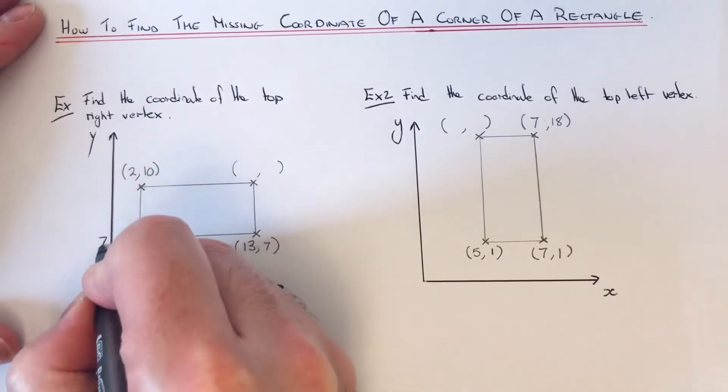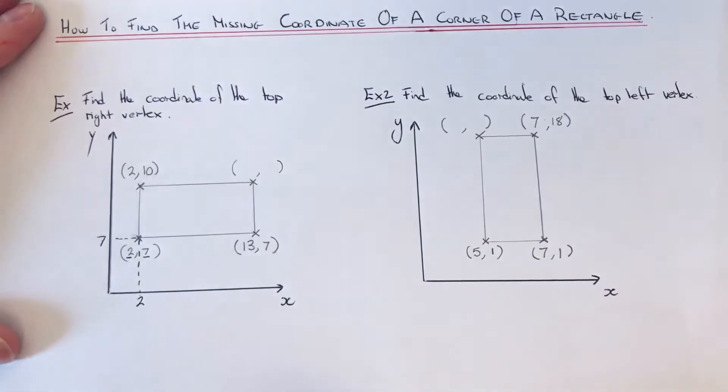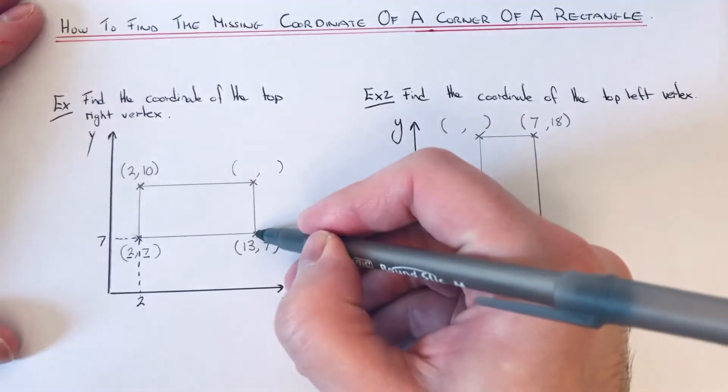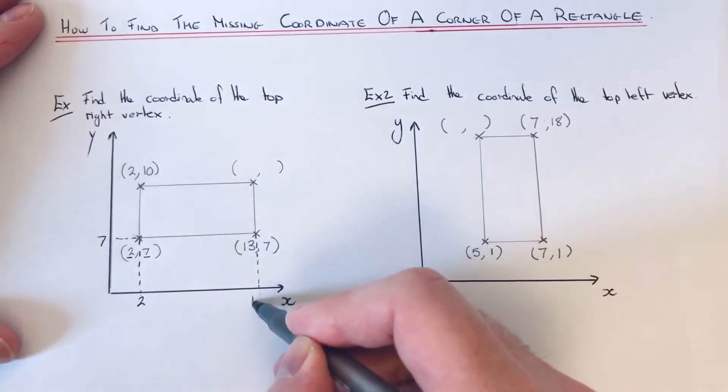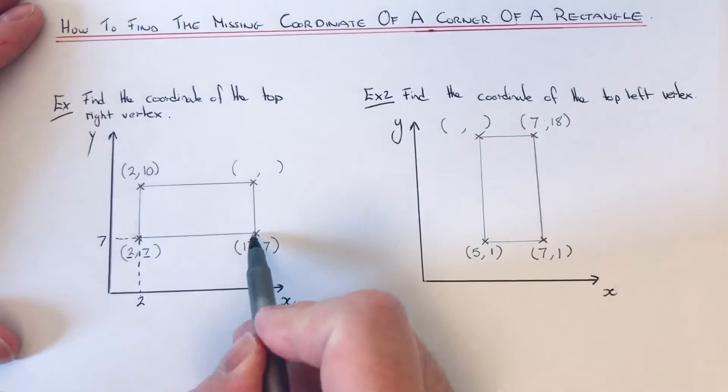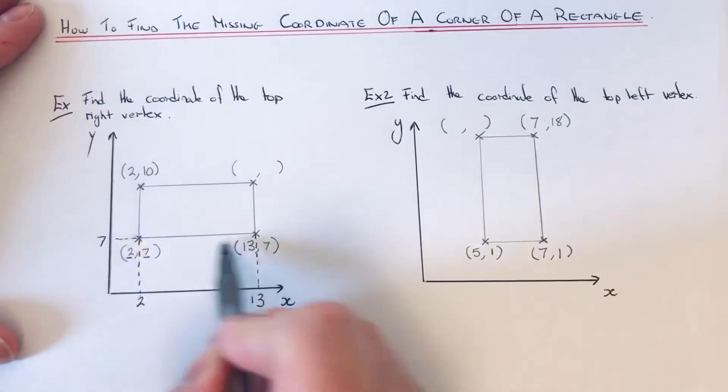Let's repeat that for the other two corners. If we do this one next, the number on the x-axis here will be thirteen, and the number on the y-axis, you can see, is seven, which we've already got.